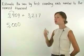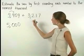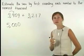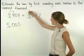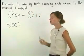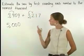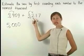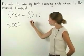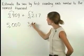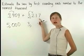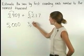Now in 3,217, notice that 3 is in the rounding position. So we look at the digit to the right of 3. Since there's a 2 in this position, we round down, which means that the 3 stays the same, and all the digits to the right of the rounding position change to zeros.